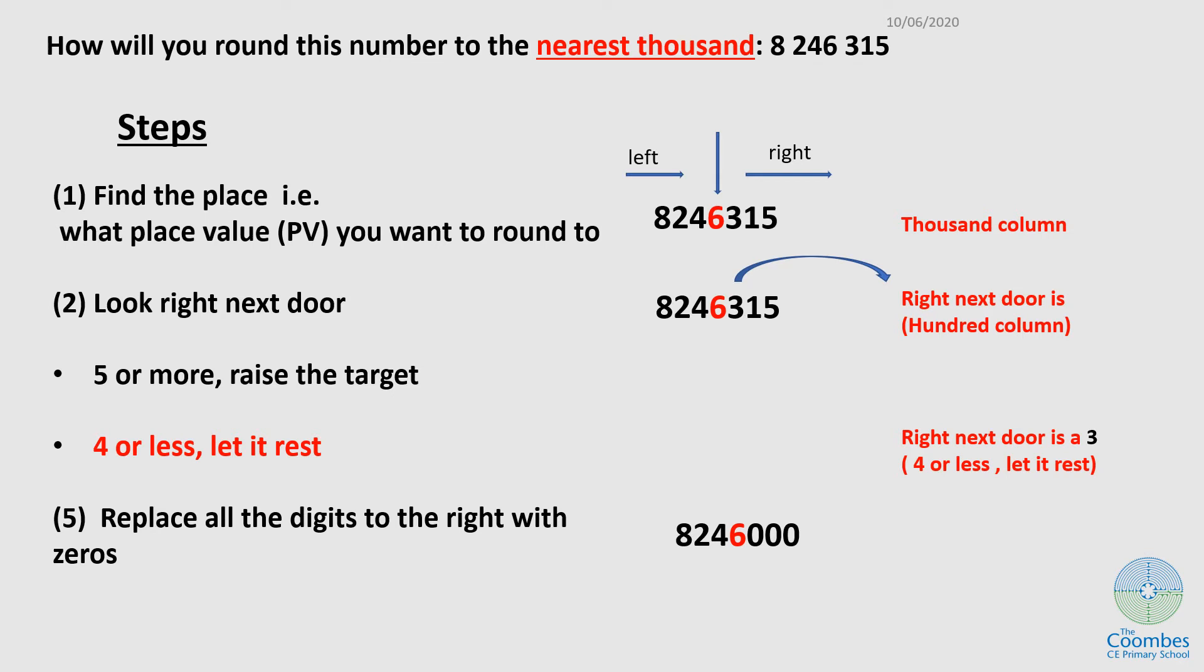Second, look right next door. From the target number, the right next door is a three. Which of these am I going to apply? Five or more, raise the target. Four or less, let it rest. I can see this number is less than four, so I'll let my place value target rest like that. And I'll replace all the numbers to the right with zeros. You can see numbers to the left, I kept the same, and numbers to the right, I replaced with zeros.